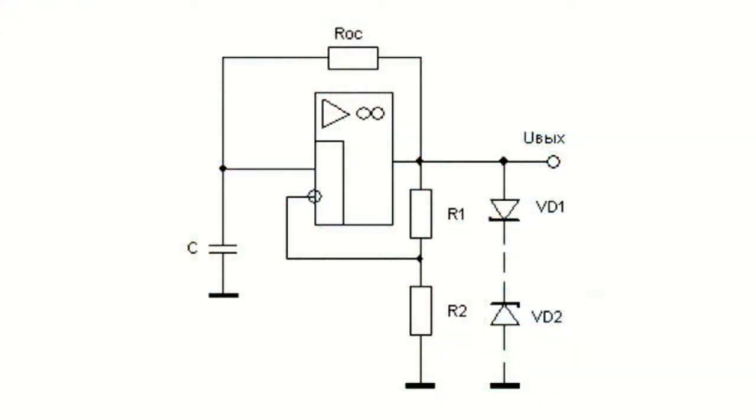However, here the active elements run into the saturation and cutoff mode, or at least approximate to it. The square pulse generator's circuit is shown in the picture.